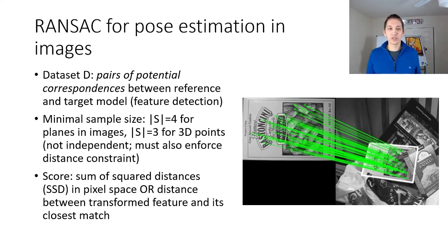In any case it's used for pose estimation in images. If you have a source image and a target image you can oftentimes just sample corresponding points between different feature points on the source and target. The minimal sample size if I was trying to find planes in images I'd have to have four points sampled. If I had actually depth information I could reduce this down to three, but the problem is then I'd have to enforce some sort of distance constraint between those points because a rigid transform is not going to allow me to shrink and stretch. Scores that can be used could include the sum of square distance in pixel space like RGB space or we could also find the distance between features and the closest match for some set of features in my source image.